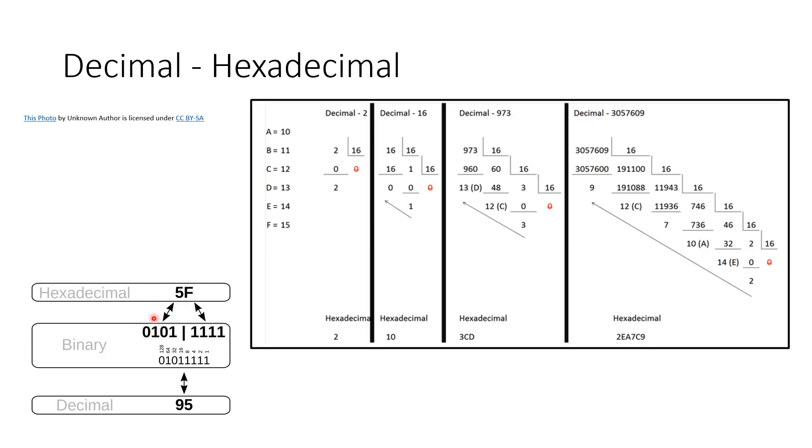2 to the power of 2 will be 4, plus 2 to the power of 0 that will be 1. Four plus one is five. Here, this one we know is 15, and 15 in hexadecimal is F. So this is how you can do this.